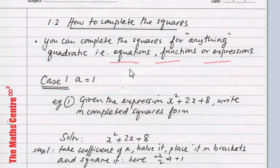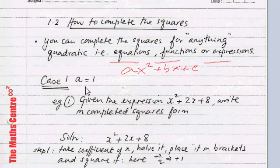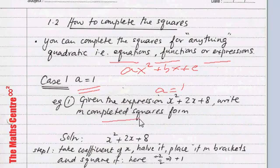Quadratics are of the form ax squared plus bx plus c. It's just a matter of whether it's equal to 0 for an equation, equal to y when it's a function, or just plain ax squared plus bx plus c for an expression. To learn how to complete the squares, I am going to look at a couple of cases. Case 1 is where a equals to 1. So if I give you an expression x squared plus 2x plus 8, remember here a equals to 1, and we are asked to write it in completed squares form.